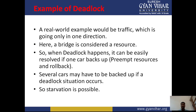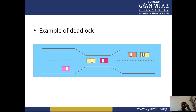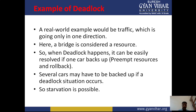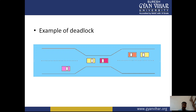A real-world example is traffic going in one direction on a bridge. The bridge is considered a resource. When deadlock happens, it can be resolved if one car backs up — preempting the resource and rolling back. Several cars may have to back up if a deadlock situation occurs. In this example, since the bridge is a single road, only one car can cross at a time; otherwise, deadlock occurs and no car can cross.